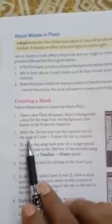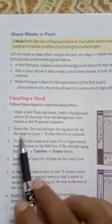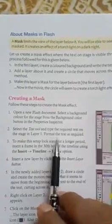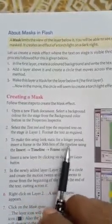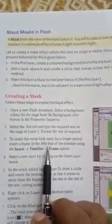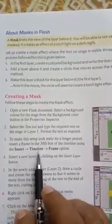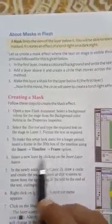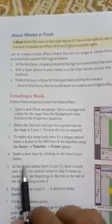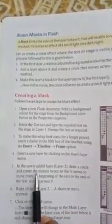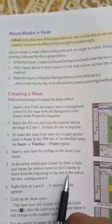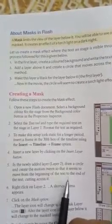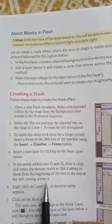To create the mask effect, follow these steps. First, open a new Flash document and select a background color for the stage from the background color button in the Properties Inspector. Second, select the Text Tool and type the required text on the stage in Layer 1, and format the text as required. To make this setup look static for a longer period, insert a frame in the 30th box of the timeline using Insert > Timeline > Frame. Fourth, insert a layer by clicking the Insert Layer button. Fifth, in the newly added layer, draw a circle and create a motion tween so that it moves from the beginning of the text to the end.